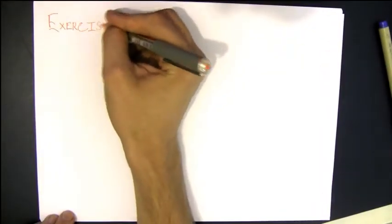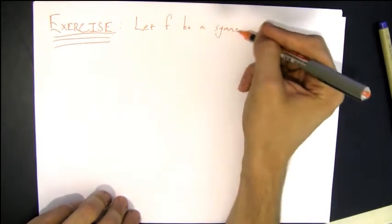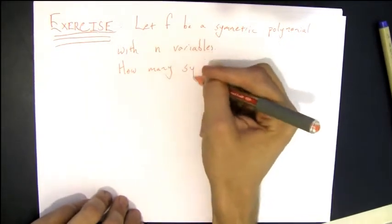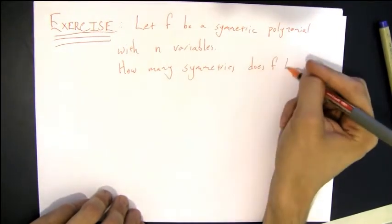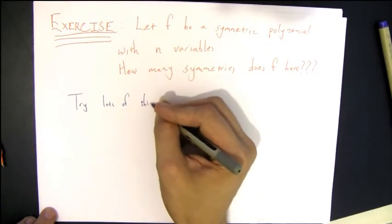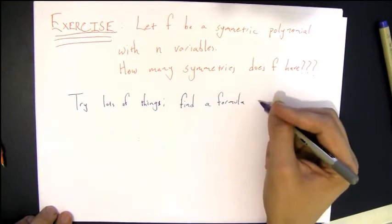So for an exercise, probably a pretty easy exercise, the question is just how many different ways are there? How many different symmetries are there of a symmetric polynomial with n variables? So far, we've only looked at three variables, but what if you had four, five, six, whatever? If you're having trouble with it because maybe you haven't worked with the general n before, just try lots of small examples and try to come up with a formula in terms of n.